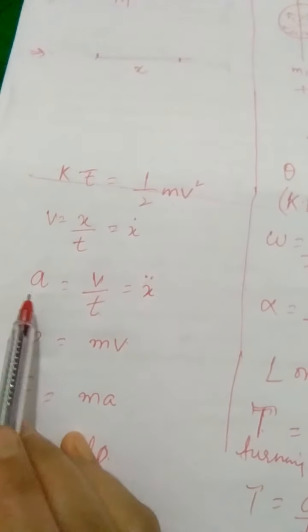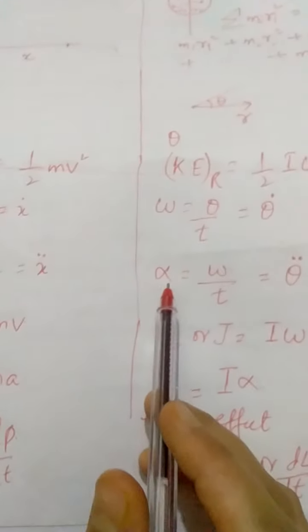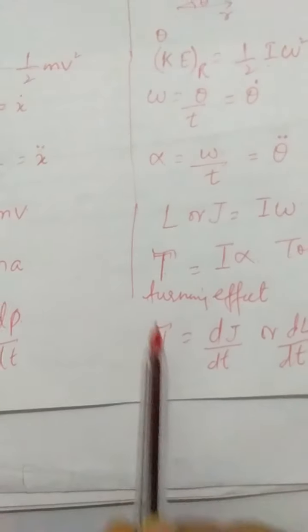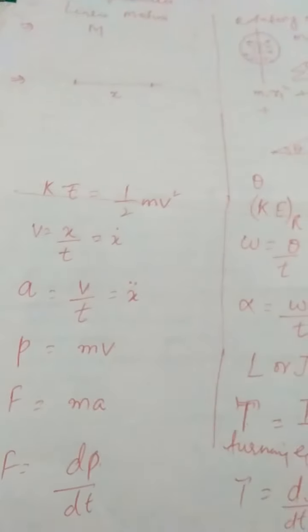To summarize: in linear motion, mass is important; in rotary motion, moment of inertia is important. In linear motion, we use linear displacement x; in rotary motion, angular displacement theta. Linear velocity x/t; angular velocity theta/t. Linear acceleration v/t or x double-dot; angular acceleration omega/t or theta double-dot. Linear momentum; angular momentum I omega. Linear force; turning force called torque — tau. Force is also defined as dp/dt, so torque is defined as dJ/dt. These are the various analogous terms defined in linear and rotatory motion.